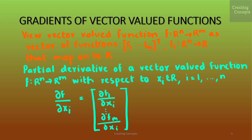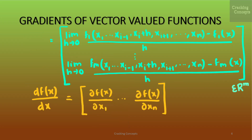Therefore, the partial derivative of a vector valued function f from ℝⁿ to ℝᵐ with respect to xi, where i varies from 1 to n, is given as a vector: ∂f/∂xi = [∂f1/∂xi, ..., ∂fm/∂xi]ᵀ, which can be expressed as the limit as h tends to 0 of [f1(x1, ..., xi + h, ..., xn) - f1(x)] / h through to fm, all belonging to ℝᵐ.